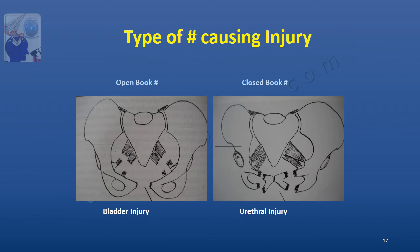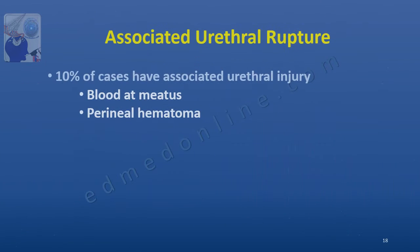Which type of fracture causes which type of injury? An open book type of fracture causes bladder injury, while a closed book type of fracture causes urethral injury. As pelvic fracture is also associated with urethral injury, we need to suspect it if there is presence of blood at the meatus or there is perineal hematoma. We need to remember that 10 percent of cases will have a urethral injury along with a bladder injury.